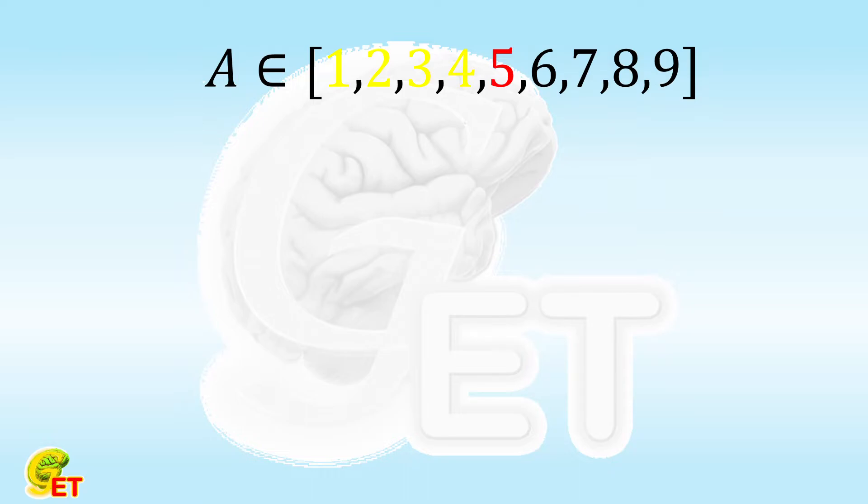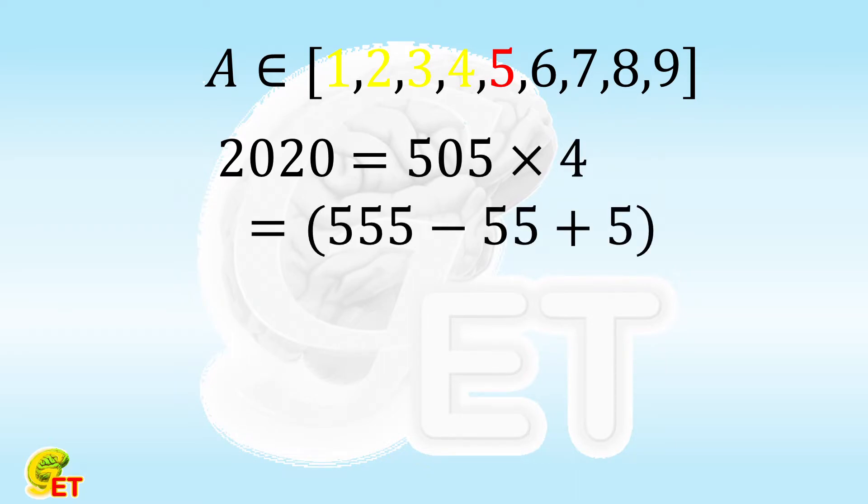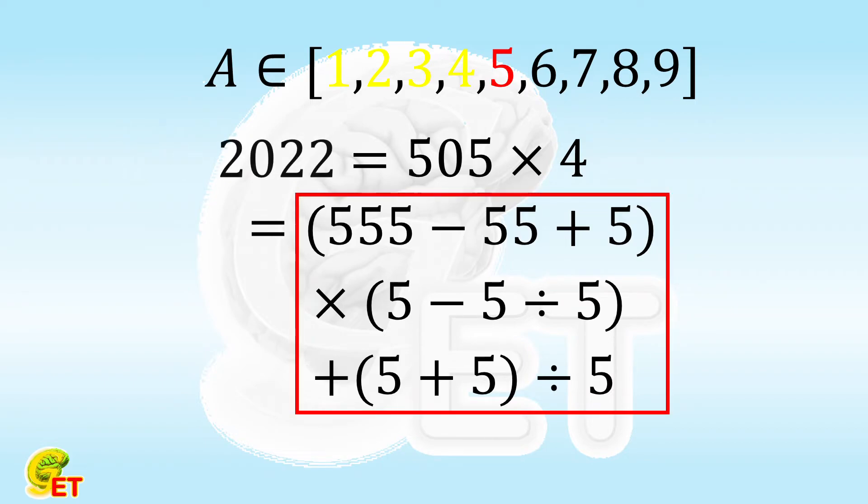Because 2020 is equal to 505 times 4 and 505 is 555 minus 55 plus 5 and 4 is 5 minus 5 divided by 5. Then we only need to add 2 by adding 5 plus 5 divided by 5. So there are in total 12 times of 5.